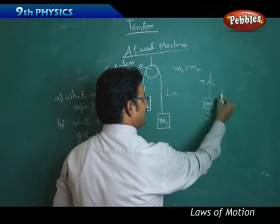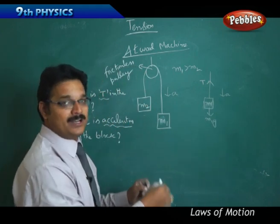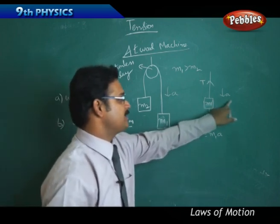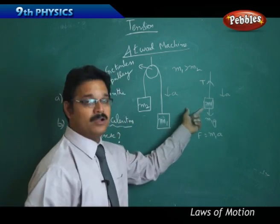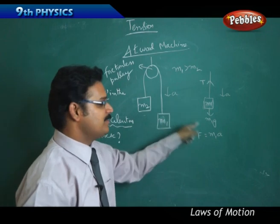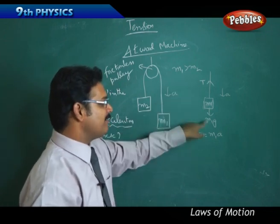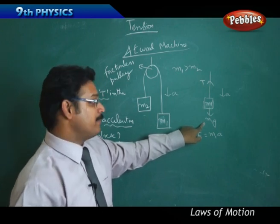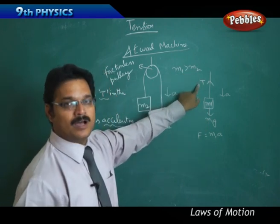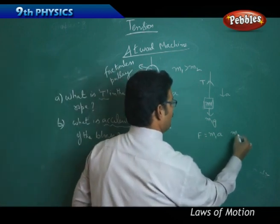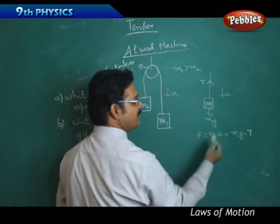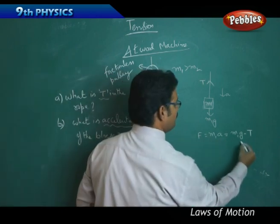By Newton's second law, the net force equals M1×a. Since M1 is moving downward, the downward force M1×g is greater than the upward tension T. So the resultant force is M1×g minus T, and this equals M1×a. Therefore: M1·a = M1·g − T. This is Equation 1.